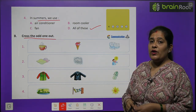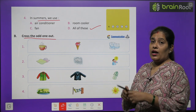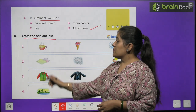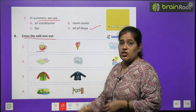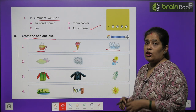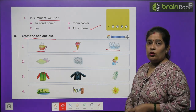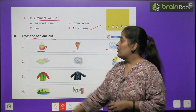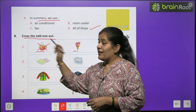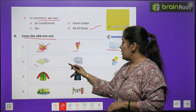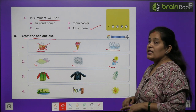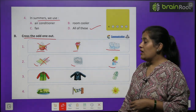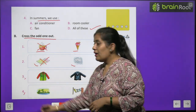Exercise B — Cross the odd one out. Sabse pehle: tea, ice cream, aur ice ki pictures hain — ice cream bhi thandi hoti hai, baraf bhi thandi hoti hai, lekin chai garam hoti hai, to yeh odd hai. Number two: Cloud, rainy, and sunny — cloud is the odd one because rainy and sunny are seasons/weather types. Number three and four — you will do by yourself.